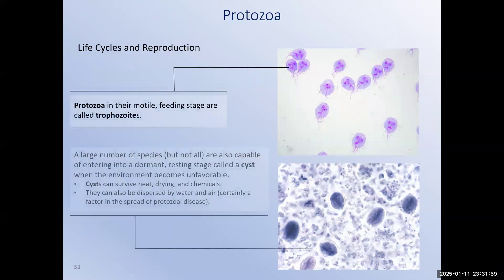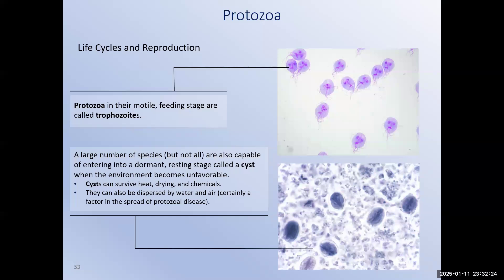Protozoa have a two-stage life cycle. Protozoa that are actively mobile and feeding are referred to as trophozoites. When environmental conditions get harsh, the trophozoite can undergo a process of encystment — as the name implies, they form structures called cysts. Cysts have more in common with a bacterial endospore than with fungal spores. Fungal spores are for reproduction, whereas the bacterial endospore and the protozoal cyst are both genetic lifeboats that allow the cells to ride out tough conditions until things improve.